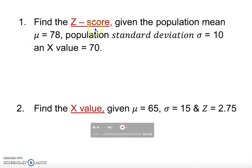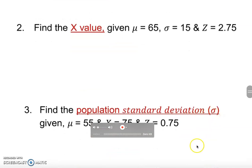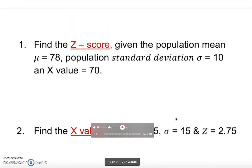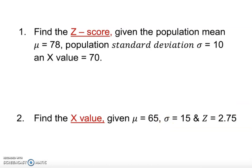Let's learn how to find a z-score given the remaining components. For example, given the population mean, population standard deviation, and the data value. We're also going to find the x value given the mean, standard deviation, and z-score, and how to find the population standard deviation given the remaining components.